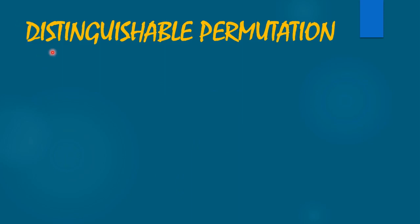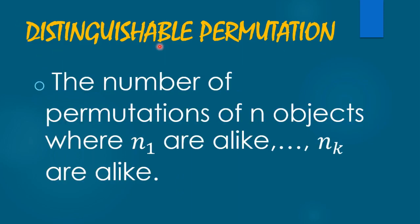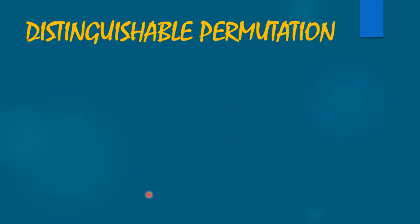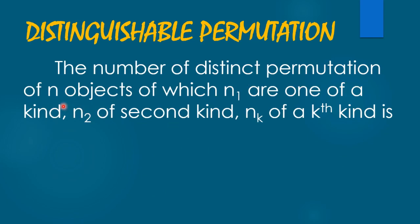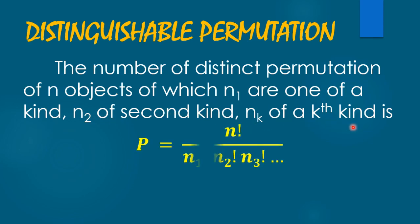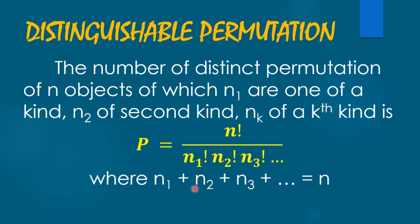We also have what we call distinguishable permutation. This is the number of permutations of N objects where N sub 1 are alike, N sub 2 are alike, and so on up to N sub k are alike. The number of distinct permutations is P equals N factorial over N sub 1 factorial times N sub 2 factorial times N sub 3 factorial and so on, where N sub 1 plus N sub 2 plus N sub 3 and so on equals N, the total number of objects.